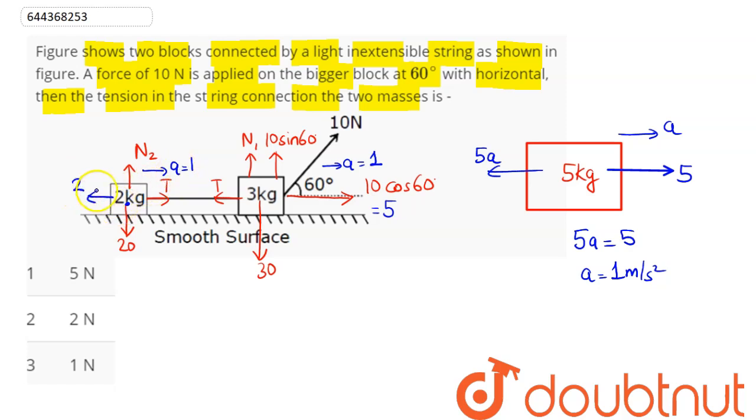by the magnitude 2 into 1 as 2. Hence balancing the force we can say here tension comes as 2 newton. So we can say tension in the string connecting the two masses is 2 newton, which here is